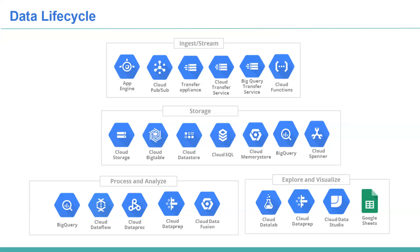For storage, you can use Cloud Storage, which supports audio, video, text files, XML, JSON, Parquet — it's object-based storage. Cloud Bigtable is a NoSQL database, similar to HBase on-premise. Cloud SQL and Cloud Spanner provide relational database capabilities like MySQL. Cloud Memorystore offers in-memory storage. For the data warehouse, we have BigQuery. The most popularly used storage options are Cloud Storage and BigQuery.